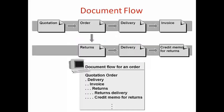Welcome again to our next topic: Copying Control. We have seen Copying Control before in previous classes, but now we will go into more detail. With Copying Control, we can create a quotation first, then an order, then from the order we can create a delivery and then an invoice. Also, if you want to create a return document, a credit memo, or anything like that — for example, a return from the order, then delivery, then credit memo — all these things are basically controlled via Copying Control.